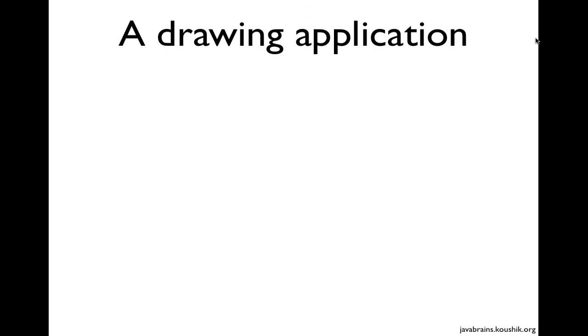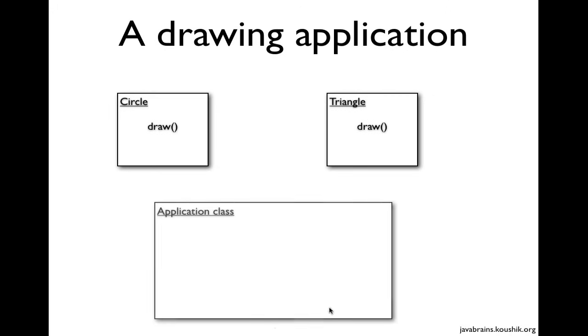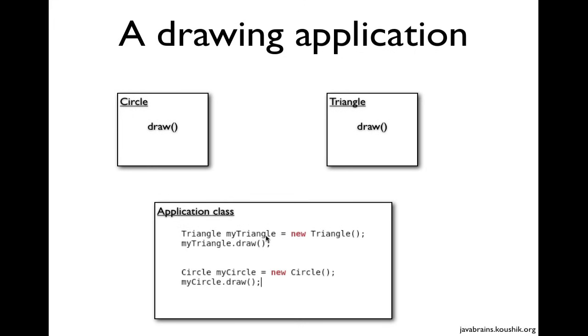Let's say I have a drawing application and I have code that draws different shapes - a triangle, a circle, and a square. I'm using that code in order to draw certain shapes on the screen. I have a circle object with a draw method and I have a triangle object with a draw method. I can use these objects to draw a circle or triangle on the screen. So if I have an application class, I can instantiate a triangle object and call the draw method of that triangle object.